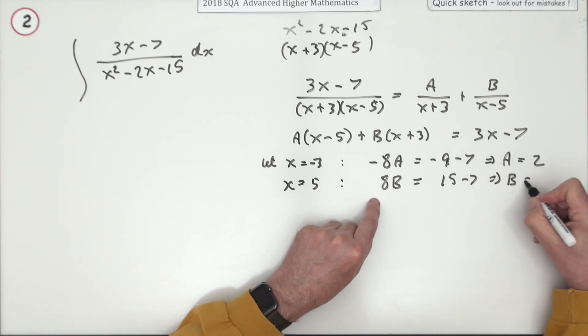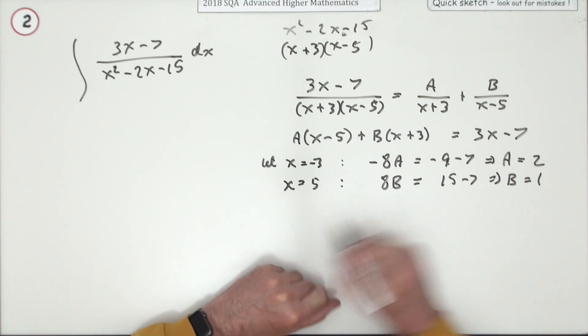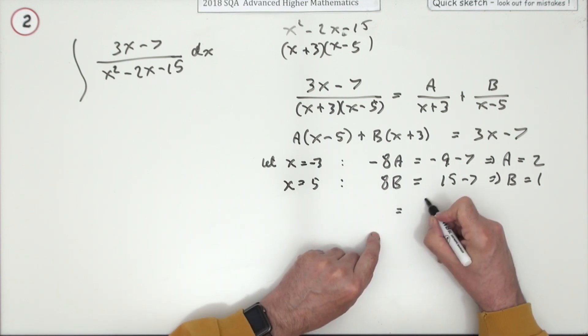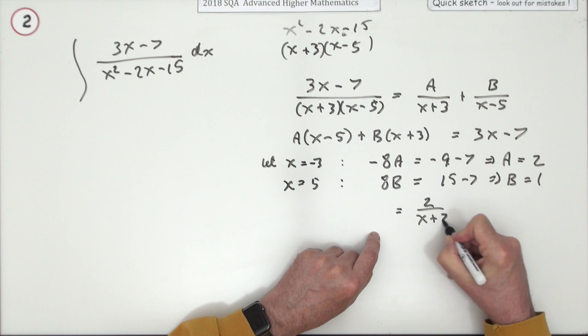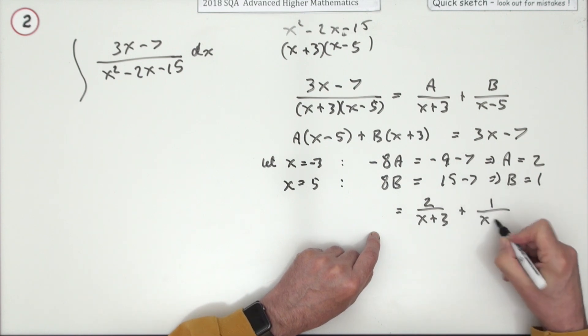So now I know what it's equal to: it's equal to 2/(x + 3) + 1/(x - 5).